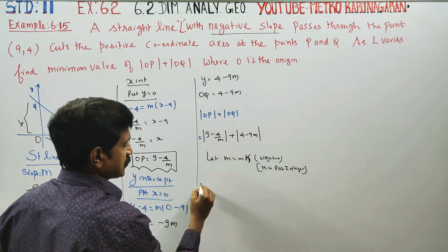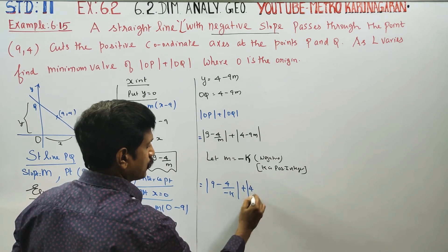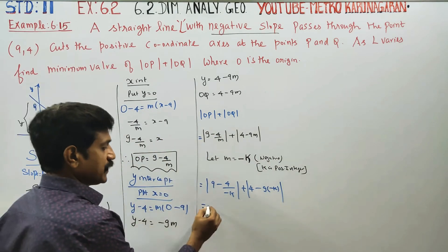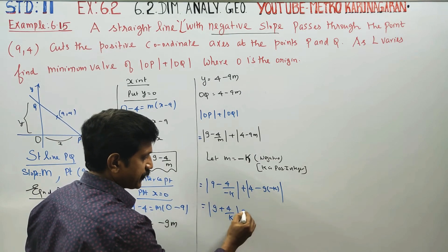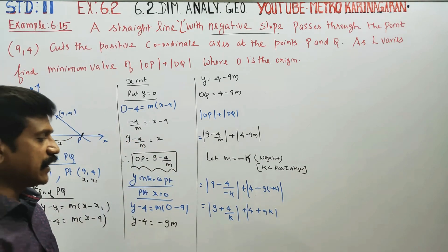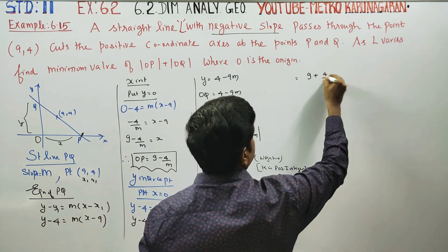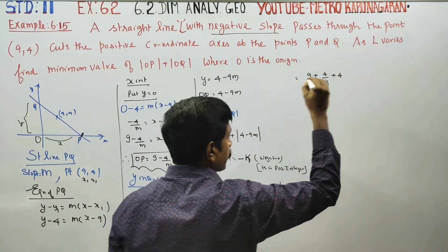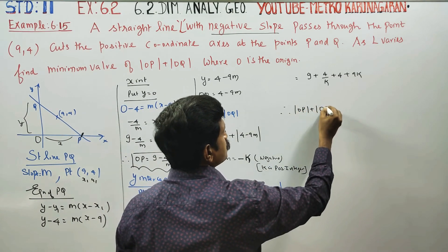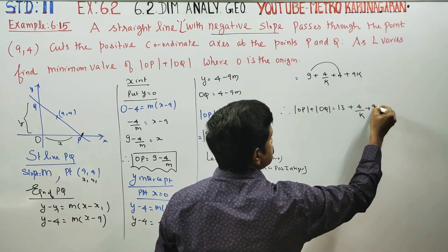Substituting m = -k: OP = 9 - 4/(-k) = 9 + 4/k, and OQ = 4 - 9(-k) = 4 + 9k. So |OP| + |OQ| equals 9 + 4/k + 4 + 9k, which simplifies to 13 + 4/k + 9k.